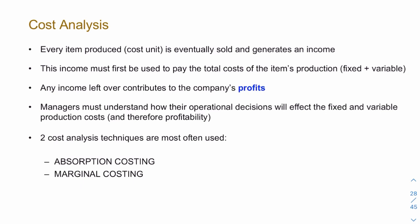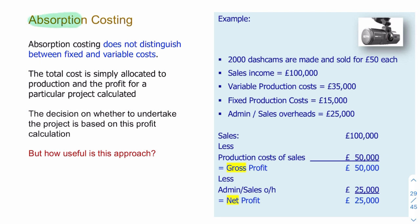We'll look at two types of cost analysis: absorption costing and marginal costing. The distinction is whether or not we consider fixed costs separately from variable costs. In absorption costing, we look at both fixed and variable costs with no distinction — we make a profit calculation based simply on the difference between what something costs and what it makes.